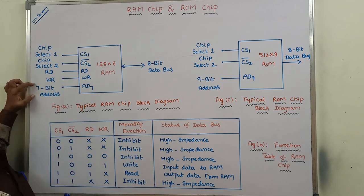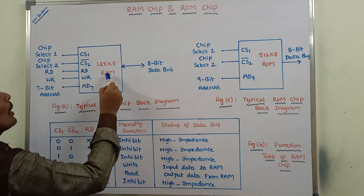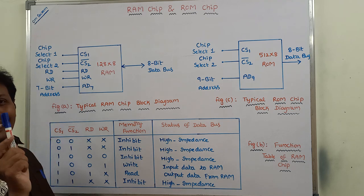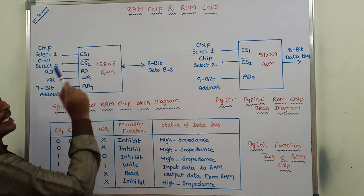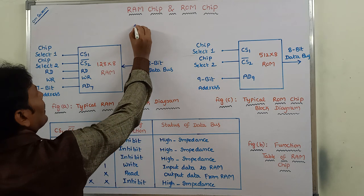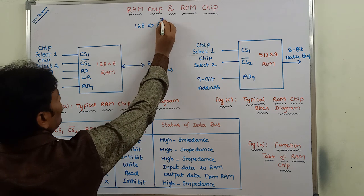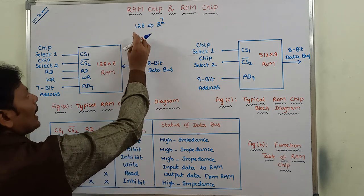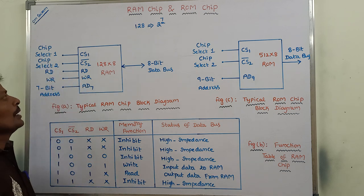This 7-bit address is used for selecting only one word among the 128 words. The RAM chip contains 128 words, and suppose we want to select only one word among them, we have to use a 7-bit address. This is because 128 can be written as 2 to the power 7, so 7 bits are required to select any word among the 128 words in the RAM chip.